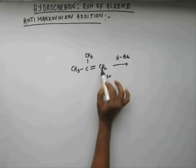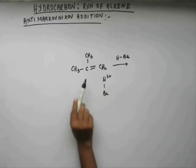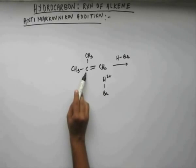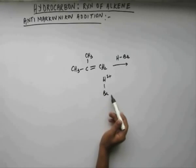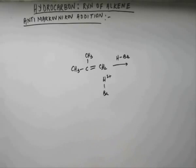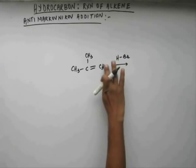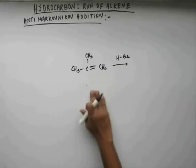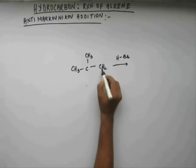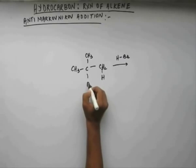Subsequently, bromide ion that would come out of HBr would come and attack in the next step. So what effectively will happen is hydrogen will get attached to this carbon and bromine will get attached to this carbon.